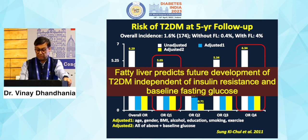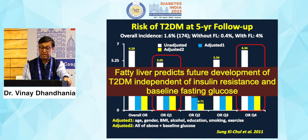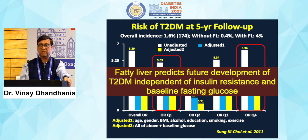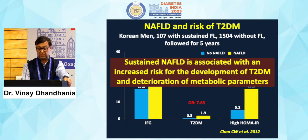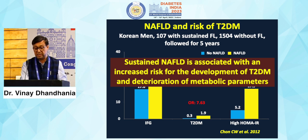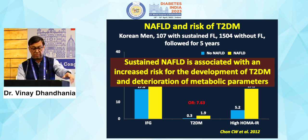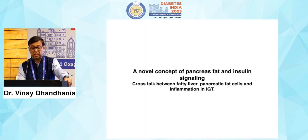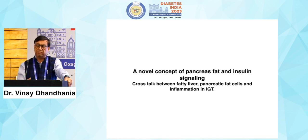Fatty liver predicts future development of type 2 diabetes independent of insulin resistance and baseline fasting glucose. So when you see a NAFLD patient, you need to intervene — don't just analyze whether the patient has insulin resistance or not. Sustained NAFLD is associated with increased risk of development of type 2 diabetes and deterioration of metabolic parameters, similarly with insulin resistance. The risk is very important to analyze.